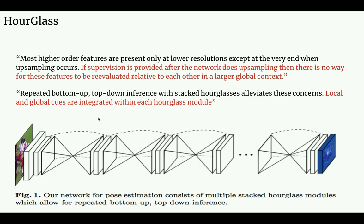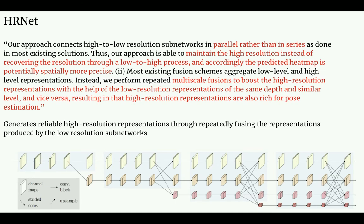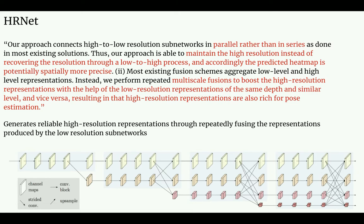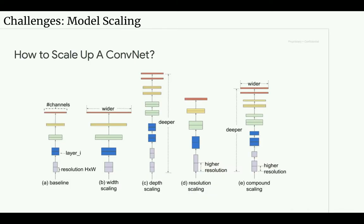Finally, we have the HR-Net. Instead of arranging different levels in series, they are arranged in parallel. You have a certain number of processing layers, then fusion layers which allow every level to talk to every other level, then again processing layers followed by more fusion blocks. This allows low-level and high-level representations to interact in a very dense manner, creating a very rich feature hierarchy at high resolution — which is important for dense prediction tasks.